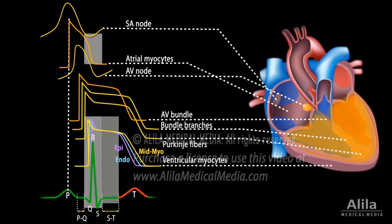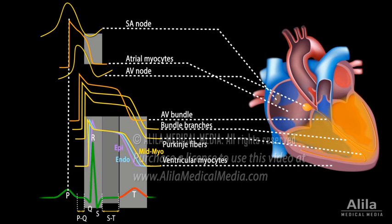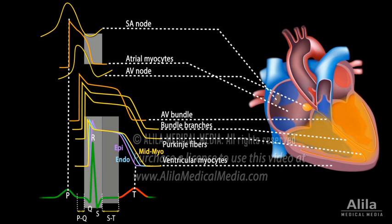The T wave corresponds to ventricular repolarization that occurs immediately before ventricular relaxation. The peak of the T wave reflects repolarization of epicardial cells, while the end of the T wave corresponds with repolarization of midmyocardium cells. The cycle repeats itself with every heartbeat.